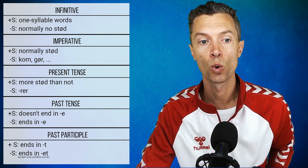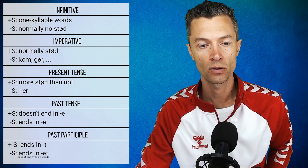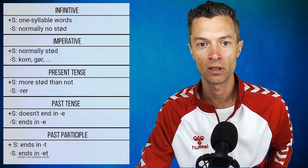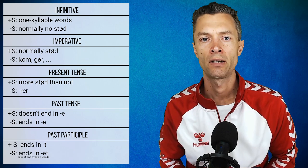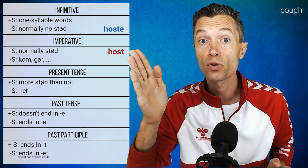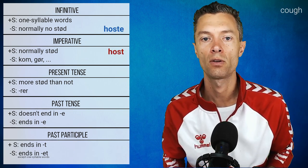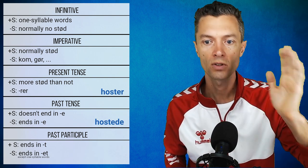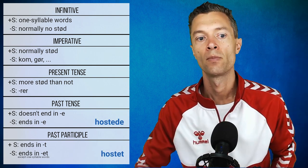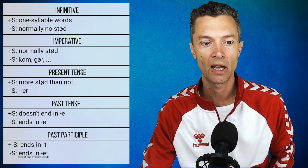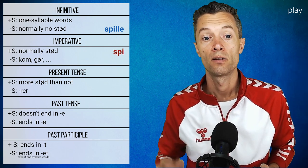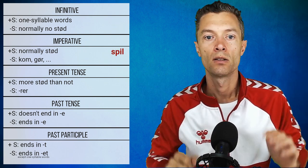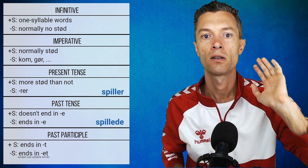However, 'hoste' — to cough — has stød in the imperative: 'host' with stød on the vowel, since whenever stød is possible in the imperative, verbs normally have it. So: 'hoste', 'host' with stød, 'hoster', 'hostede', 'hostet'. The same pattern with 'spille': 'spille', 'spil' with stød, 'spiller', 'spillede', 'spillet'.